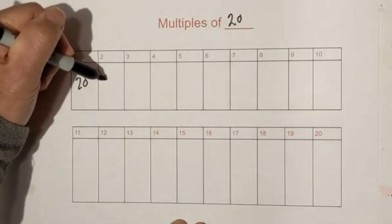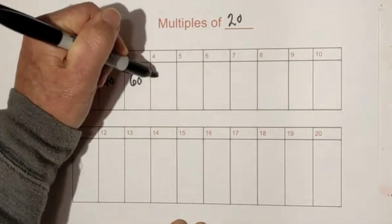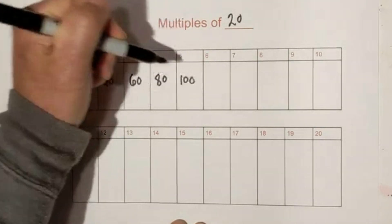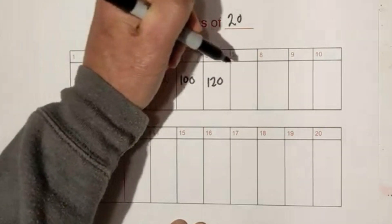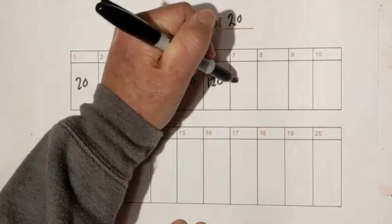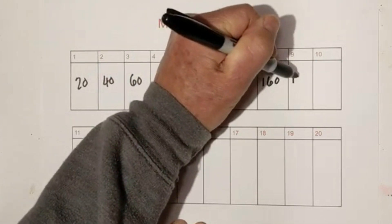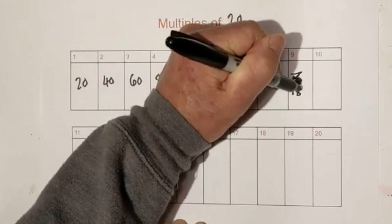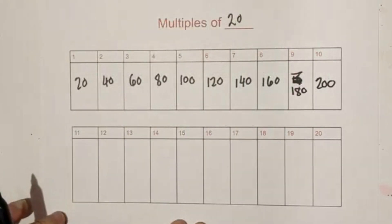20 times 2: 40, 60, 80, 100. And then it just kind of repeats: 120, 140, 160, 180, 200.